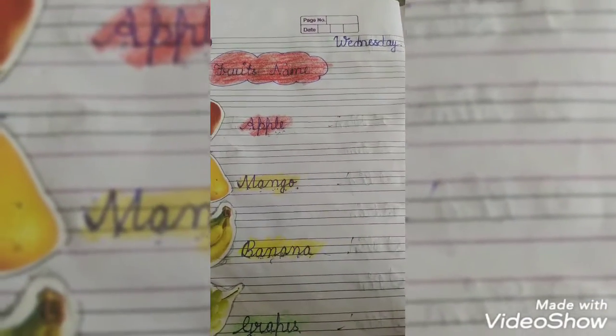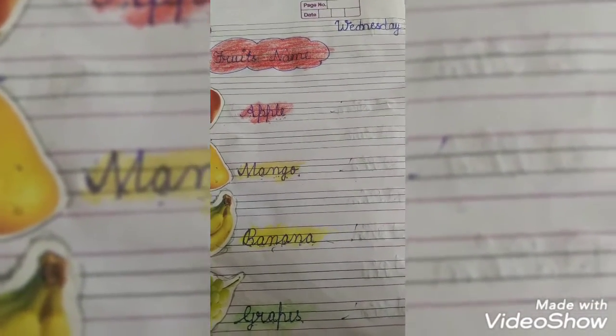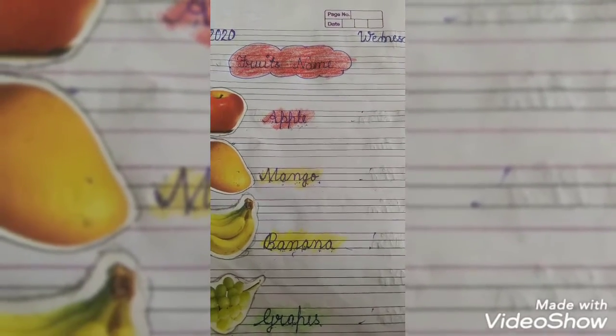Apple. Mango. Banana. Apple. Mango. Banana. Grapes. Leachy. Orange. Grapes. Leachy. Orange.